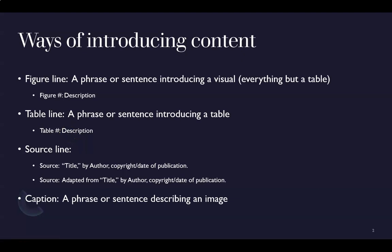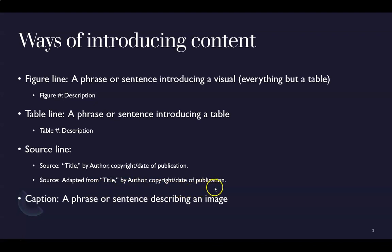A source line is how you give credit to a source when you're not able to use APA in-text citation or MLA style citation. You can indicate two things: if the content is borrowed exactly from the original source, you write 'source' and then the title, author, and copyright or date of publication. If you're taking information from the source but creating your own table or graph, you write 'source' followed by 'adapted from,' then the same information — title, author, and copyright or date.